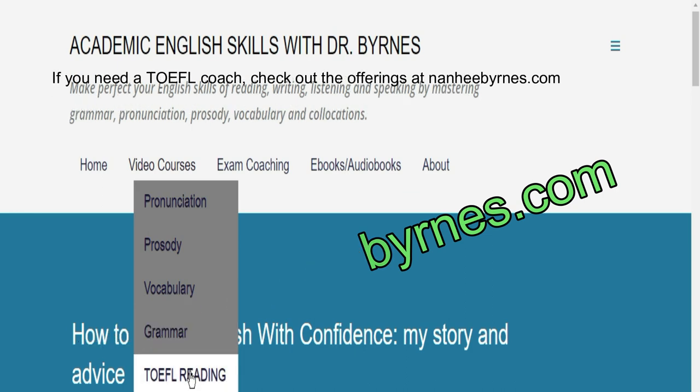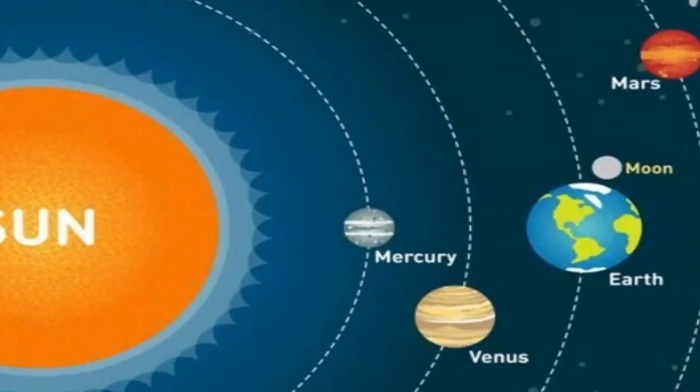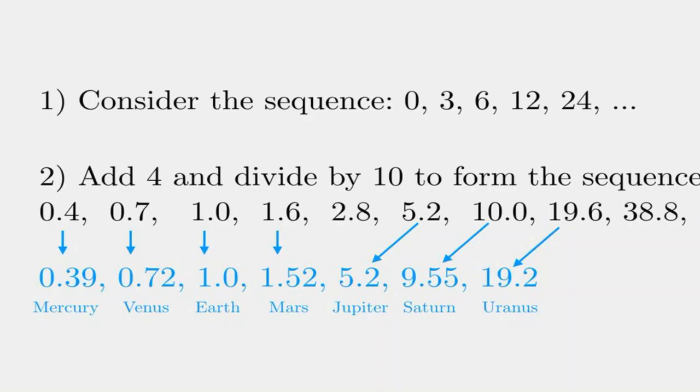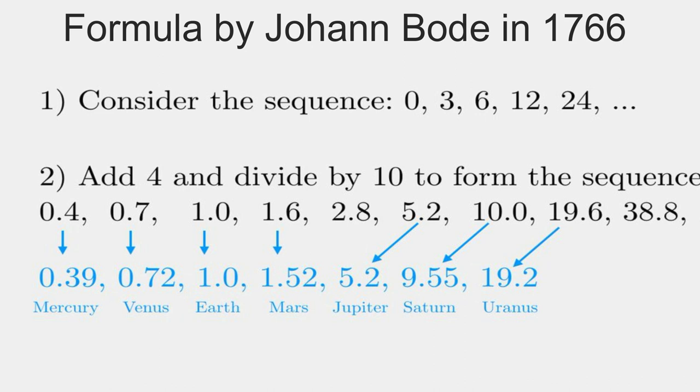So what is Bode's law? The law is about the spacing of planets' orbits around the sun. In 1766, Johann Bode proposed an easy way to memorize the approximate mean distances of many planets from the sun. The unit of distance is called the astronomical unit. This is the formula he discovered.